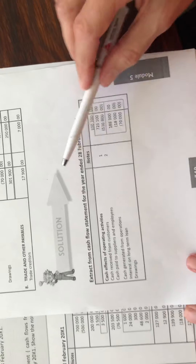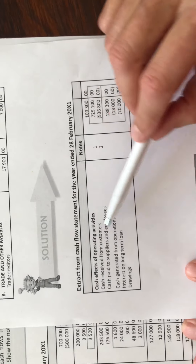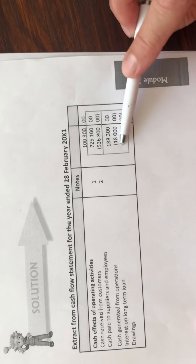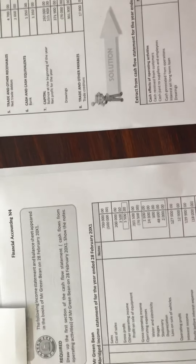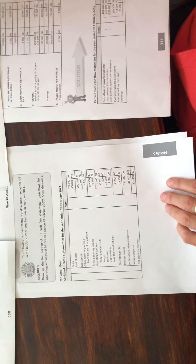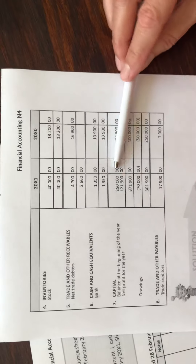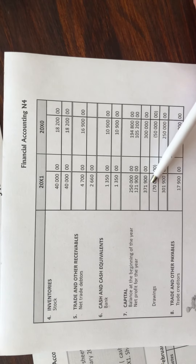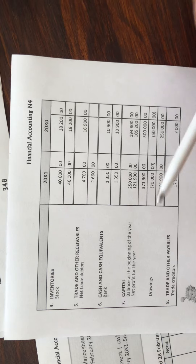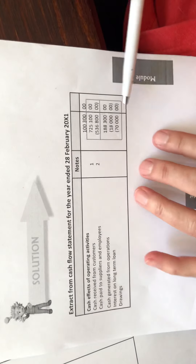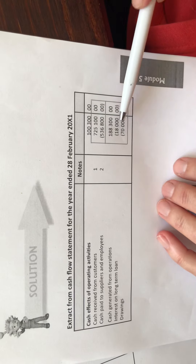The other item we deduct to get cash effects of operating activities is drawings — 70,000 — which also comes from the balance sheet notes. Looking at the capital note, you can see drawings was 70,000 for the year. That is where we get the 70,000 from.